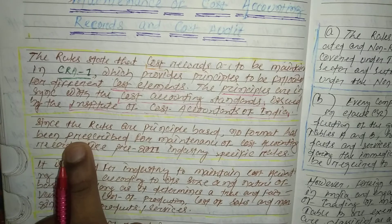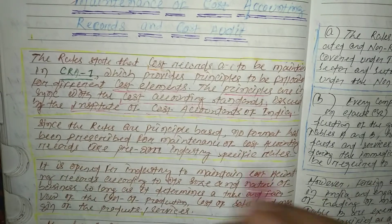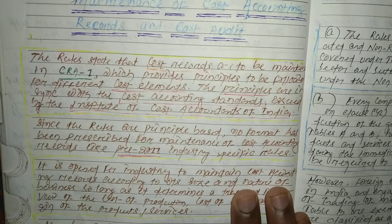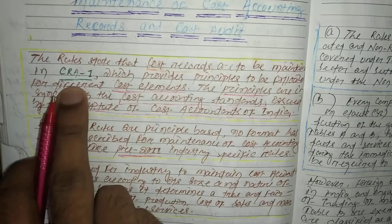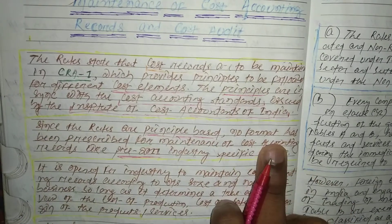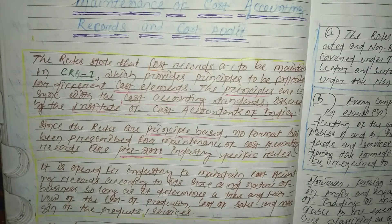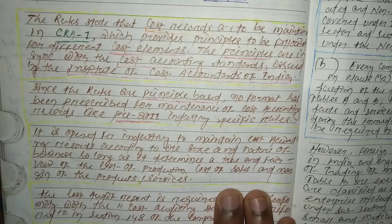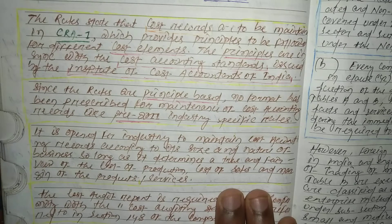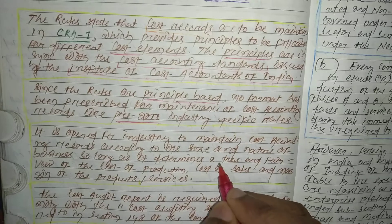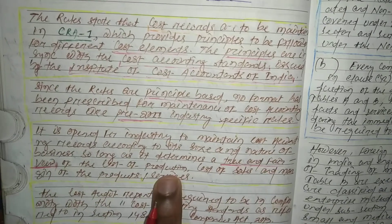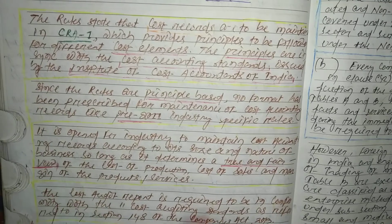Since the rules are principle-based, no format has been prescribed for maintenance of cost accounting records, unlike pre-2011 industry-specific rules. It is open for industry to maintain cost accounting records according to its size and nature of business, so long as it determines a true and fair view.